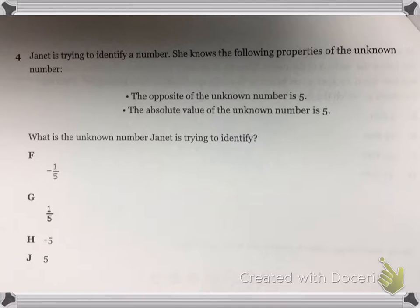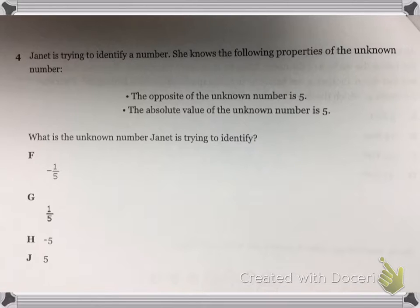Janet is trying to identify a number. She knows the following properties of the unknown number: the opposite of the unknown number is 5, and the absolute value of the unknown number is 5. What is the unknown number Janet is trying to identify?